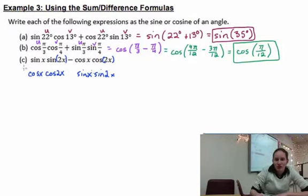So if we rewrite this, we've got minus cosine x cosine 2x, plus sine x sine 2x. But it doesn't match our identity. Our identity needs to have the minus sine be in the middle. So what we're going to do is we're going to factor out the negative.